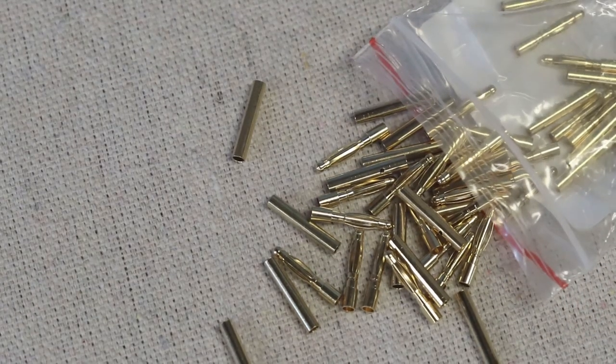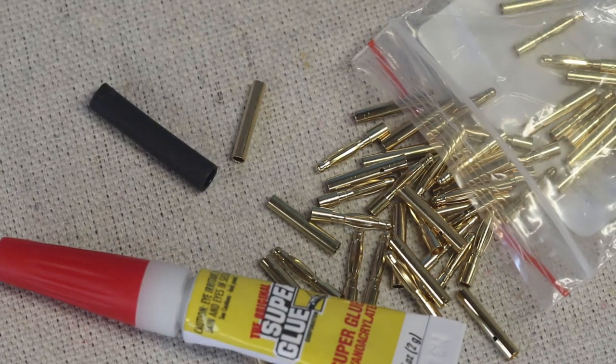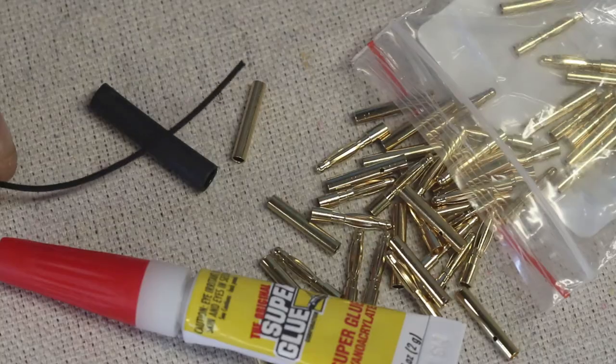To make these links you're going to need a few things. First, these 2.5 millimeter banana plugs, some super glue, heat shrink tubing, preferably the stuff with the adhesive inside, and some antenna wire.